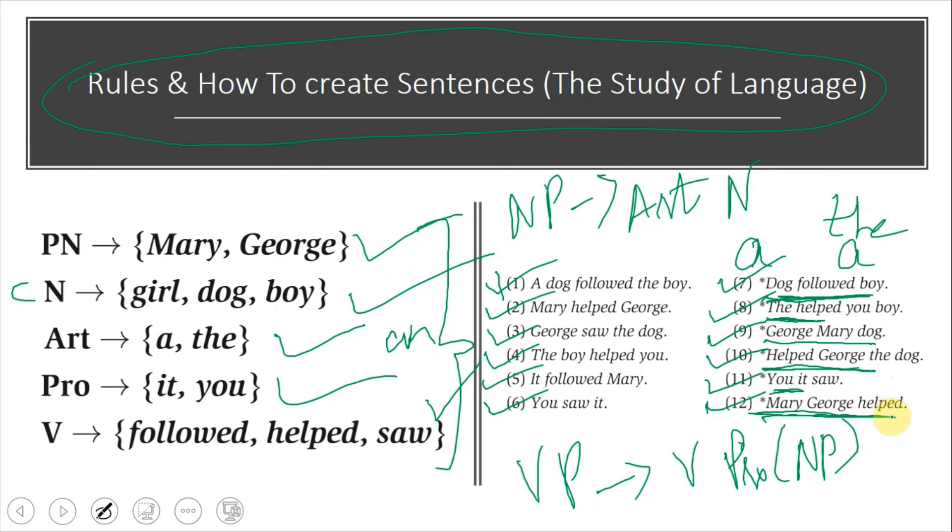'Mary helped George' can work, but not with the wrong sequence. So these combinations show us which sentences are incorrect and which are correct.